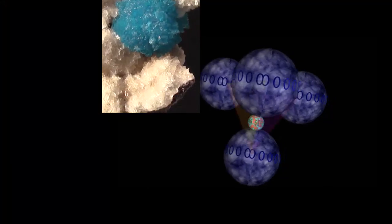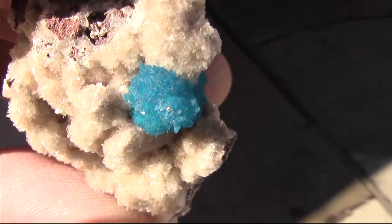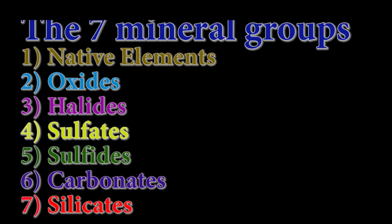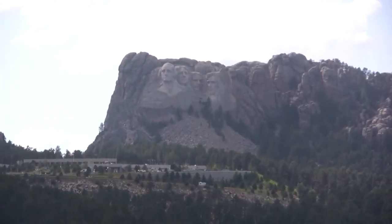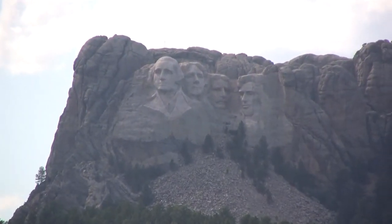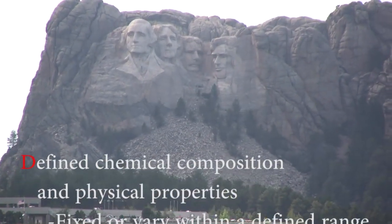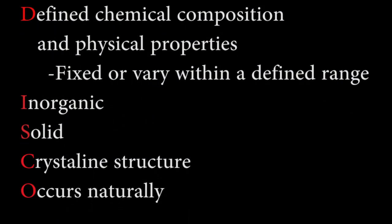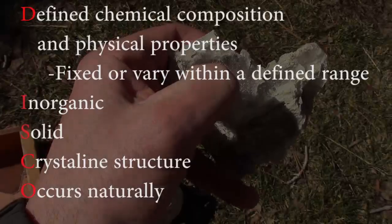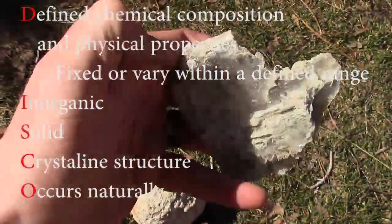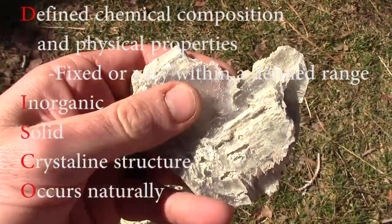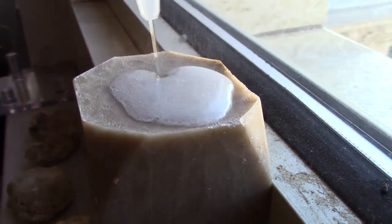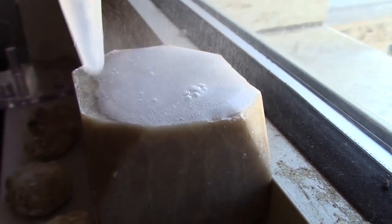We will start exploring individual minerals by looking at the silicate minerals first, which will take a few episodes, and then devote one mineral group to each following episode until we complete minerals and begin rock identification. In order to identify a mineral, you must delve into that part of the definition that says a mineral has physical properties that are definite, or vary within a defined range. These physical properties are the diagnostic characteristics we will use to identify individual minerals — so hone up on your detective skills, because finding what makes each mineral distinctive is the subject of our next episode.